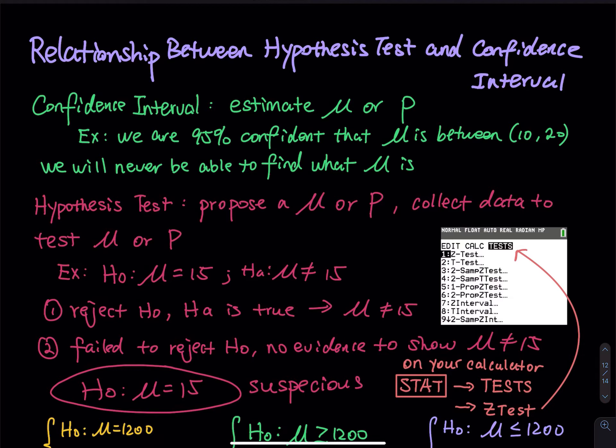In the previous video, I showed you how to set up H0 and HA, and then how to determine the correct procedure and calculate whether you have a z-test, t-test, or proportion. So you calculate z or t, and then there is a corresponding p-value, and then you use the p-value and alpha to decide whether you reject or fail to reject the null hypothesis.